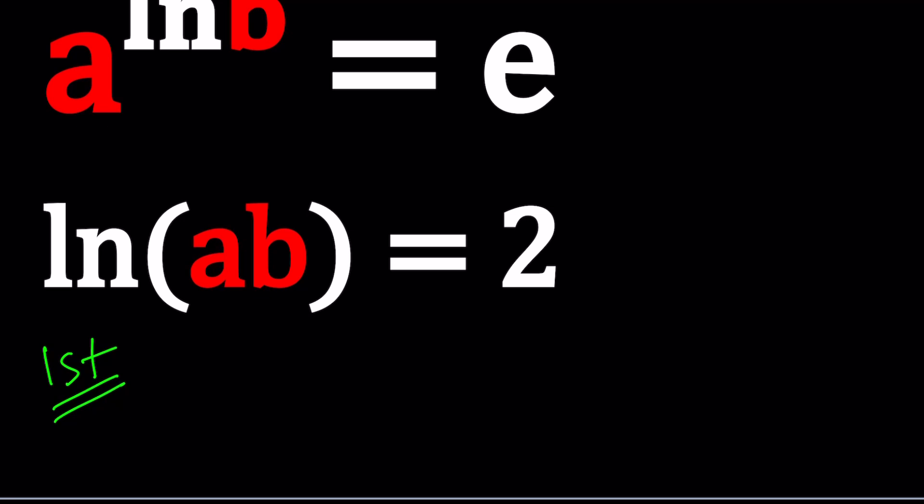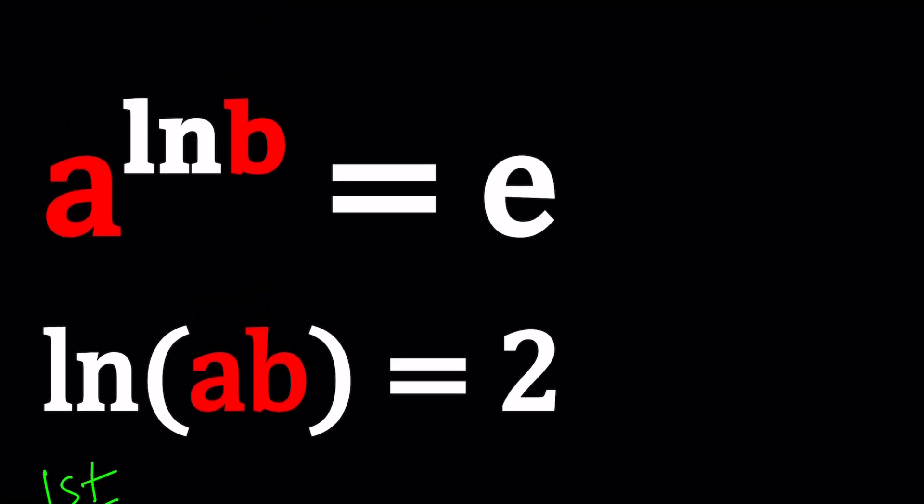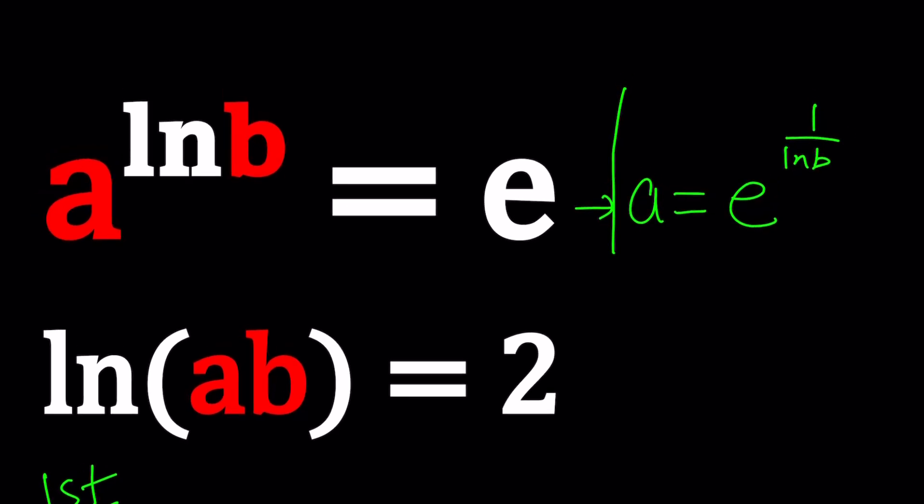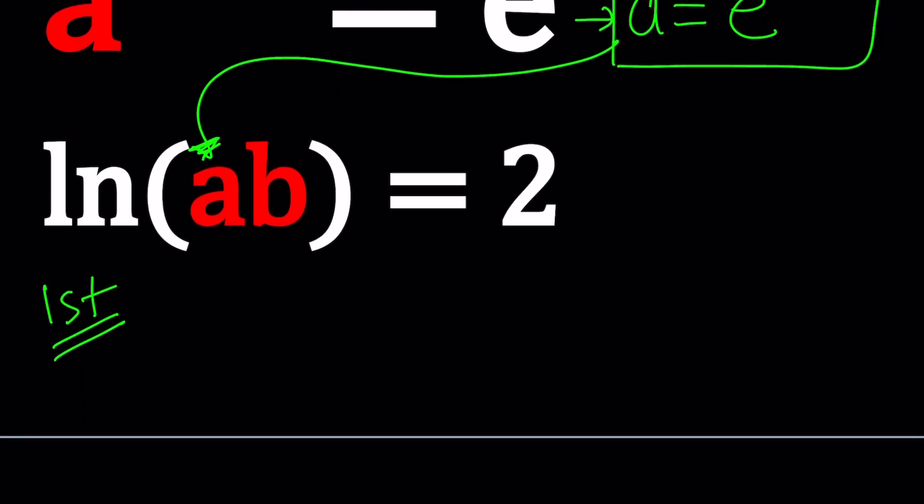For my first method, I want to be able to replace something with something else. From the first equation, since I can't take out b easily, I can probably isolate a. Let's raise both sides to the power 1 over ln b. So I can basically write a as e to the power 1 over ln b, which can then be substituted here. Let's go ahead and do that.